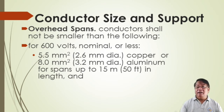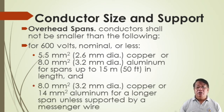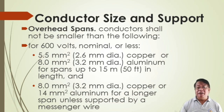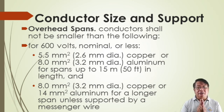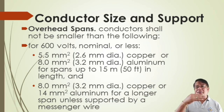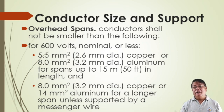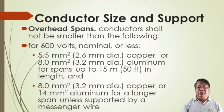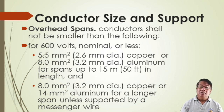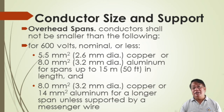For spans longer than 15 meters or 50 feet, use 8.0 mm² copper or 14 mm² aluminum unless supported by a messenger wire. A messenger wire is a tie wire or solid wire that supports the conductor within a longer span. For more than 15 meters, use 8.0 mm² copper or 14 mm² aluminum.